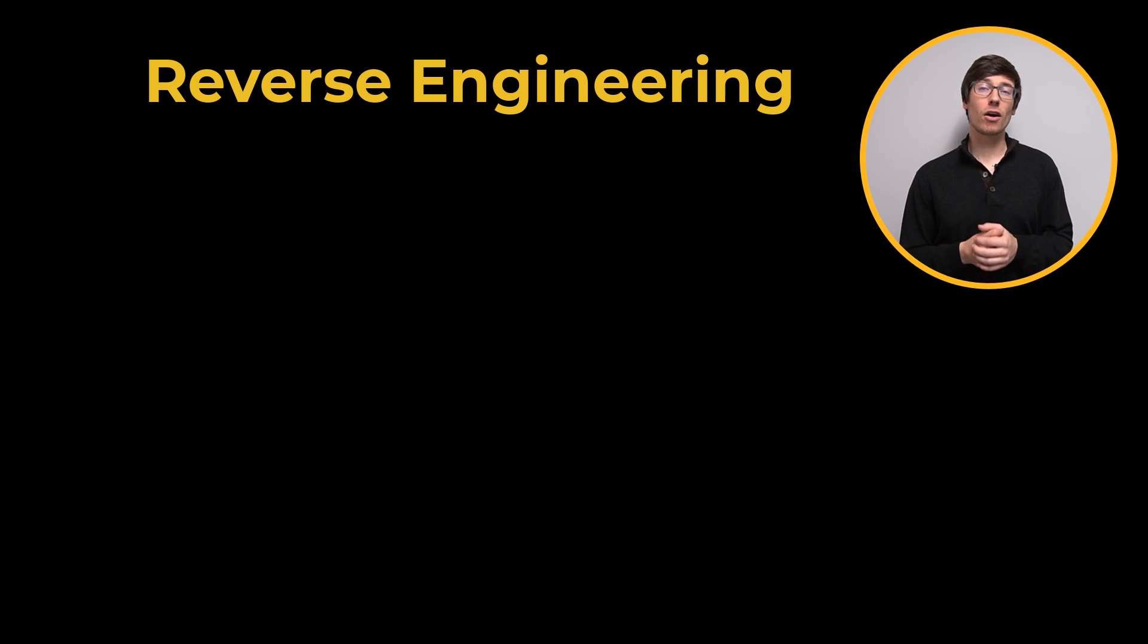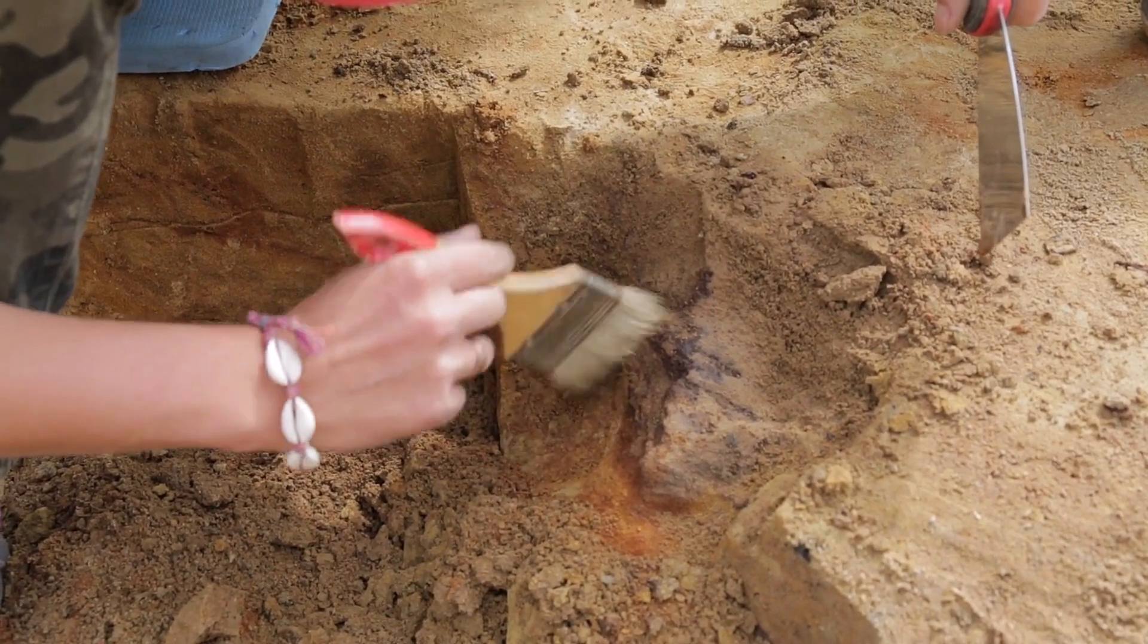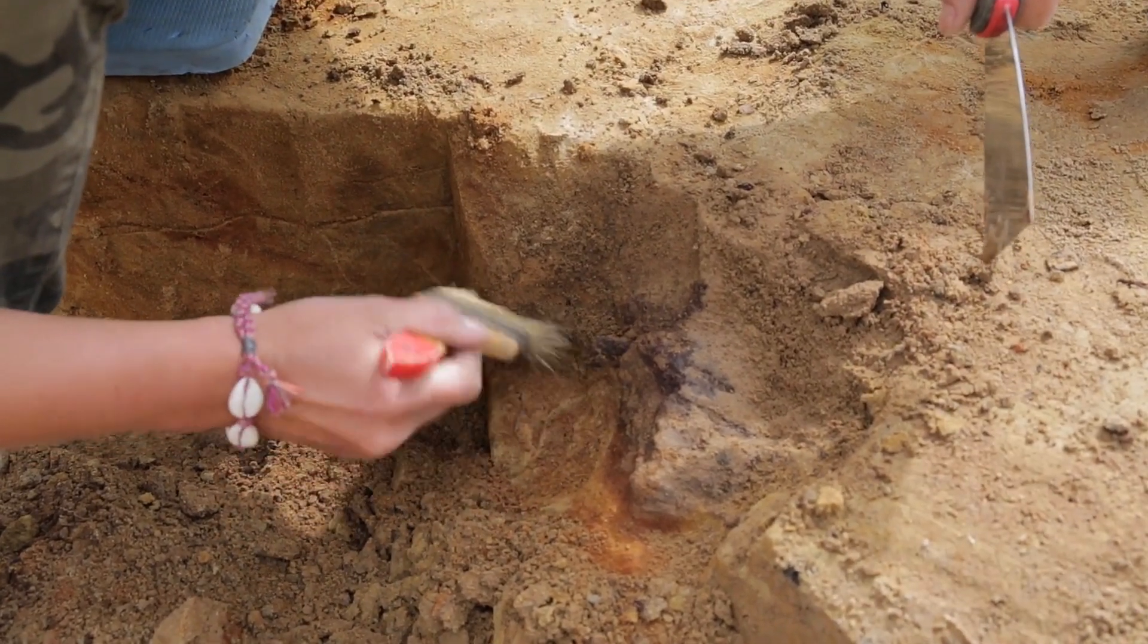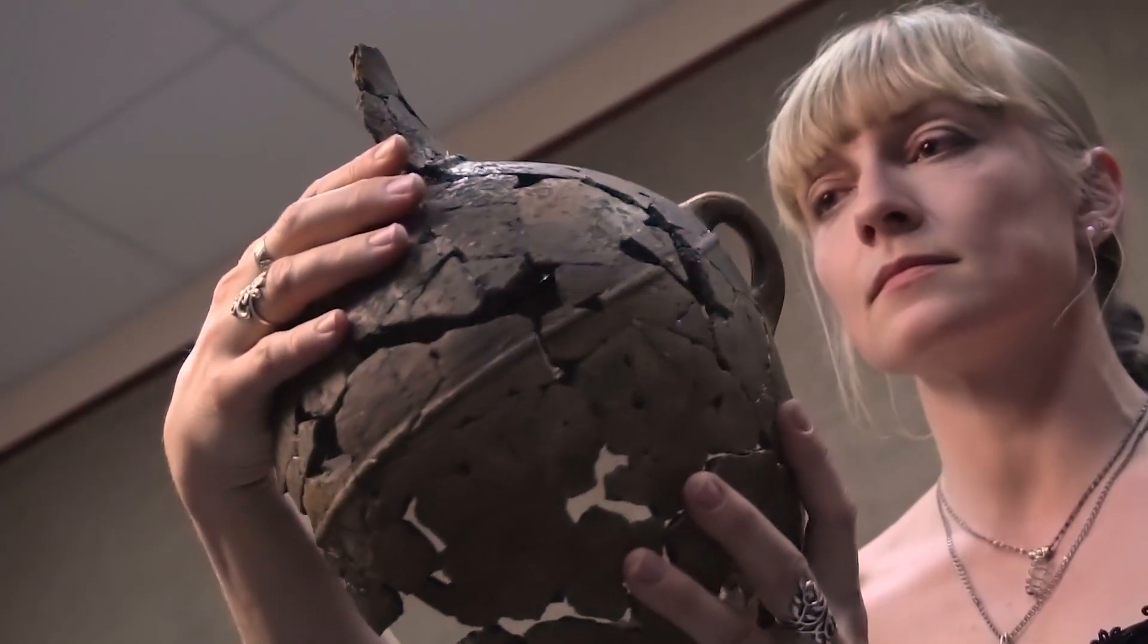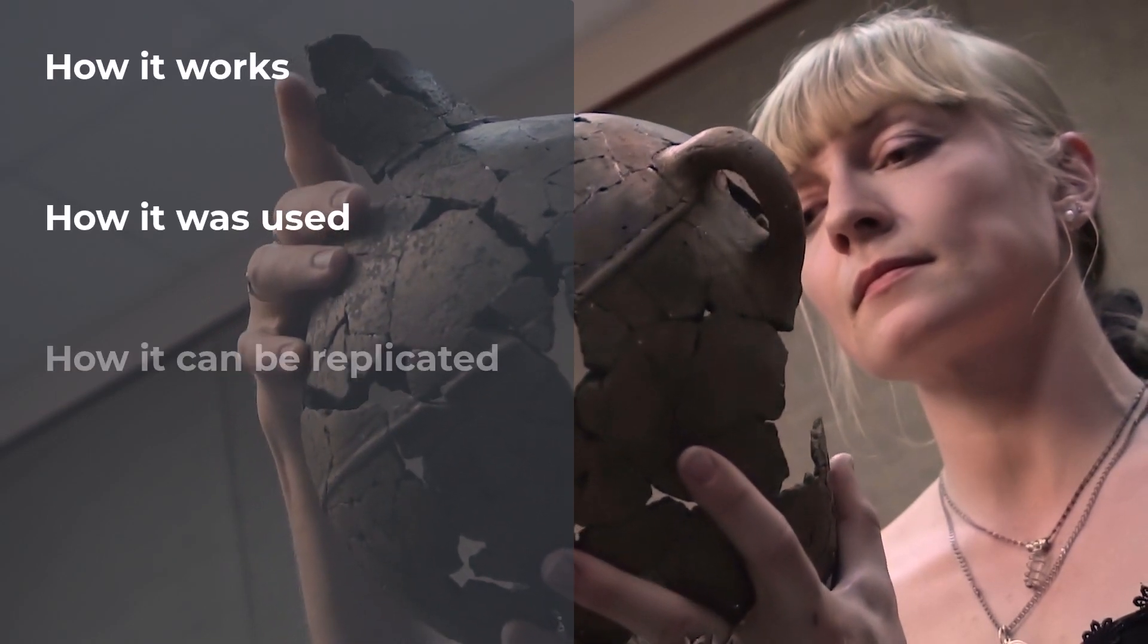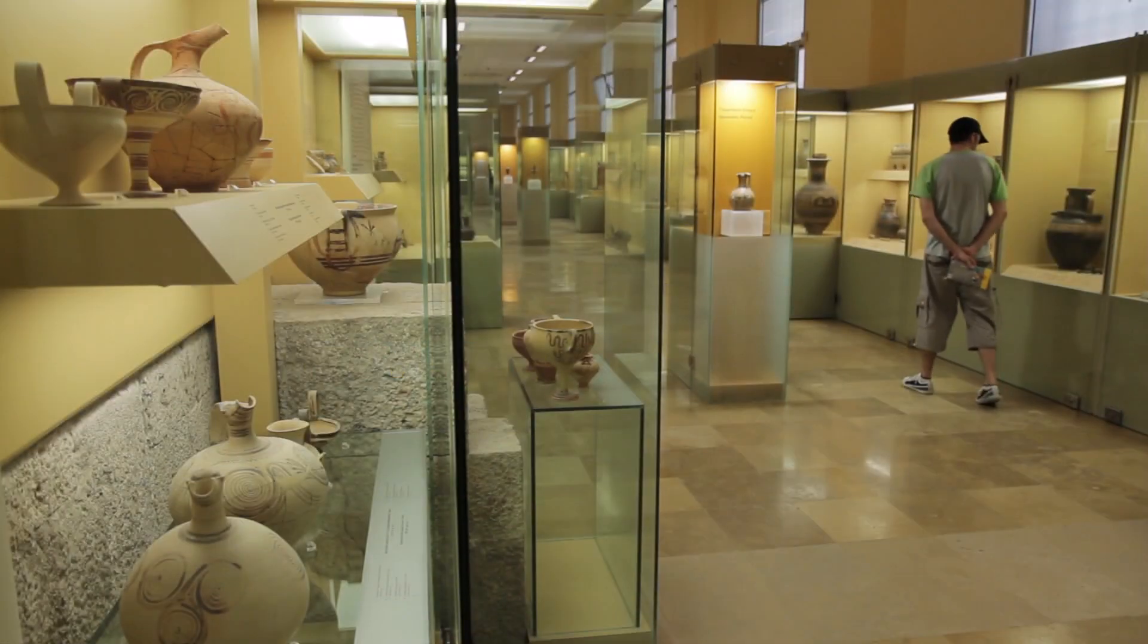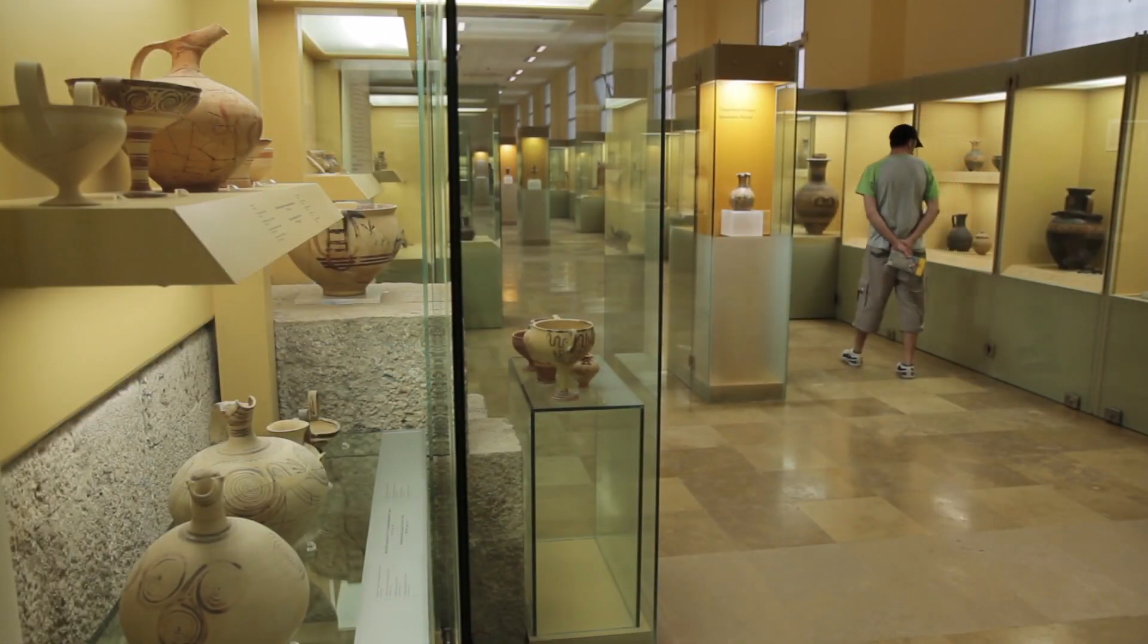Reverse engineering is like being an archaeologist who discovers an ancient machine created by unknown manufacturing processes. They study the machine to understand how it works, how it was used, and how it can be replicated. They can then reverse engineer parts of that machine so it looks complete in a museum display.